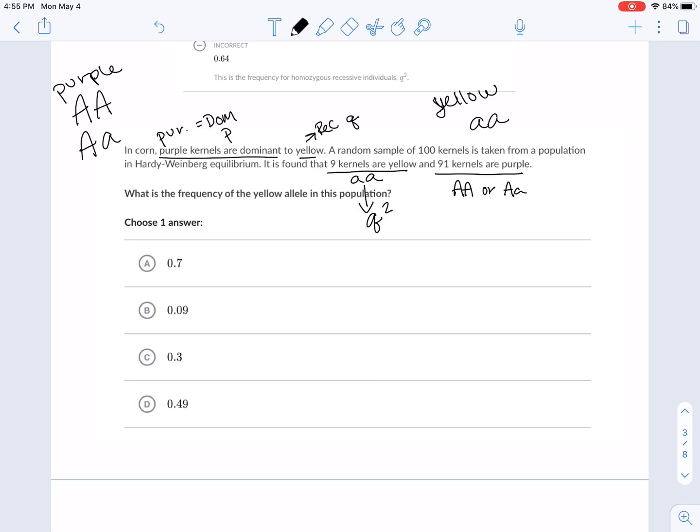Q squared, homozygous recessive, little a, little a. You just have to memorize this. That's why I put it in here for you. So this is where we are right here. We have that information. We know that. I haven't even read the question yet. But the question says, what is the frequency of the yellow allele? It wants to know what's Q. We know what Q squared is. It's nine. It's nine what? It's nine out of 100 because that's the total, right?